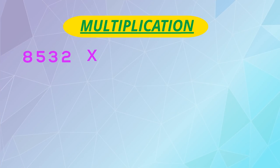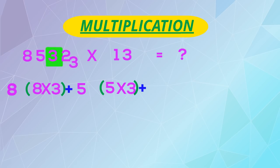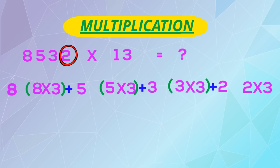Our final example: 8532 into 13. 8 will come down, then 8 will get multiplied with 3 and get added with the next digit that's 5. Then 5 into 3 plus next digit that's 3, then 3 into 3 plus next digit that's 2. Lastly 2 into 3.